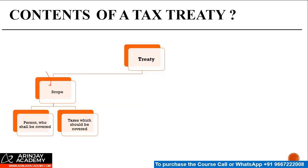The first part deals with the scope of the treaty — who are the persons who shall be covered under the treaty. The purpose of this clause is that it is not that everyone can go and claim benefit under a treaty. It is only a certain specified set of people who are entitled to claim the benefit under a given treaty. So if you have an India-Mauritius treaty, a person who is a tax resident of the US cannot claim a benefit under this treaty. So the scope deals with who are the persons covered under the treaty.